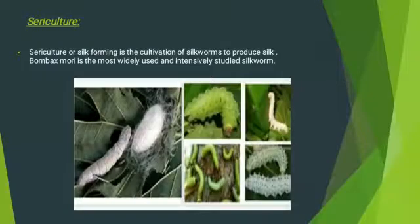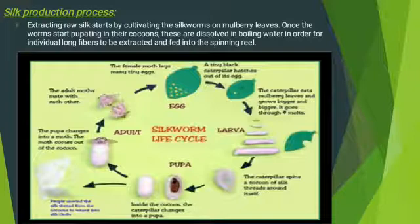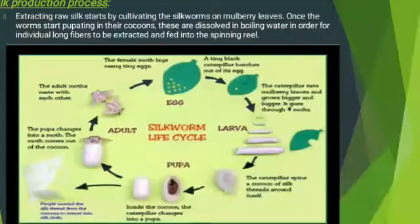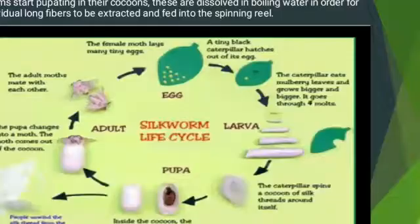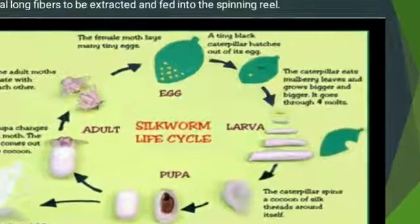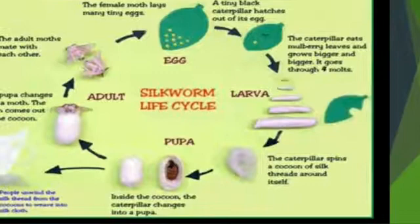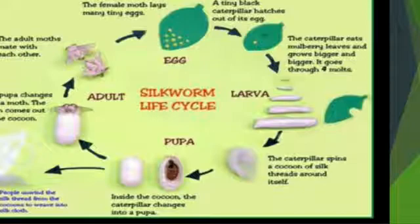Sericulture is a silk-product producing process. In the life cycle of silk production, the adult moth Bombyx mori lays eggs. The eggs hatch into thick black caterpillars, which then change into larvae. The larva forms a cocoon — a white-colored material — around itself.